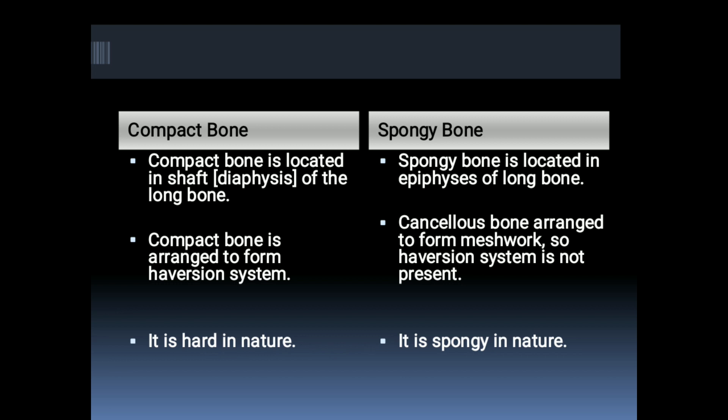First, compact bone is located in the shaft of the long bone — the shaft is called the diaphysis. While spongy bone is located in the epiphysis of the long bone — the epiphysis refers to the ends of the bone.